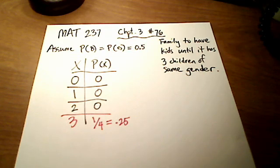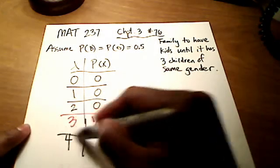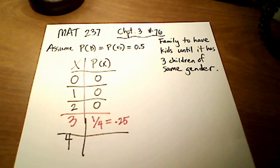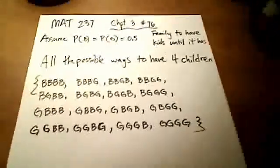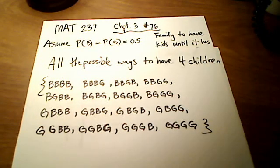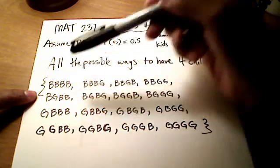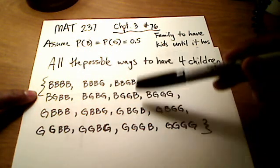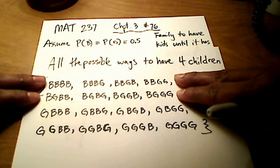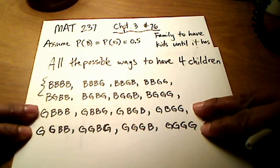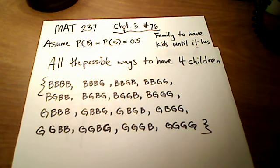Now let's check what happens if a family has four children. What's the probability that they have three kids of the exact same gender? Things get a bit more complicated. I've worked out all the possible ways of having four children — all boys, all girls, or some combination. The first two rows start with boy as the oldest; the last two rows start with girl as the oldest.